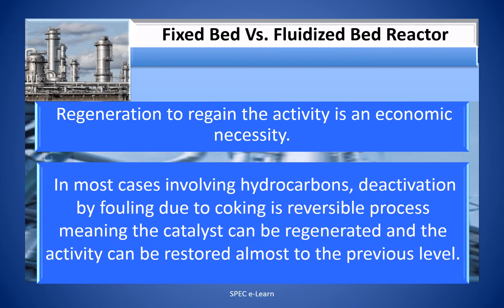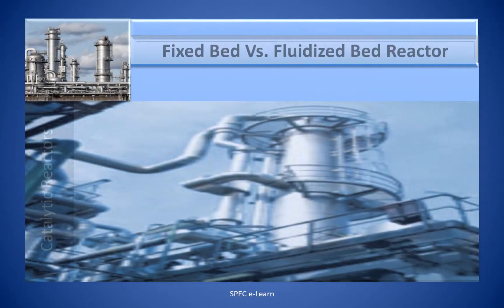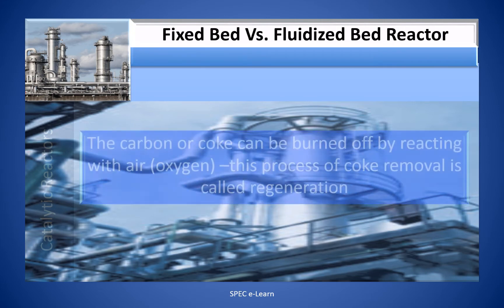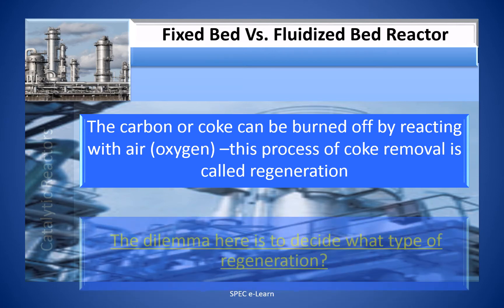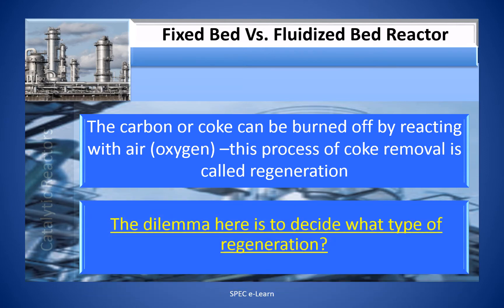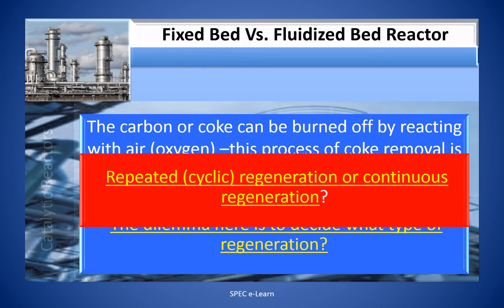In most cases involving hydrocarbons, the deactivation by fouling due to coking is a reversible process, meaning the catalyst can be regenerated and the activity can be restored almost to the previous level. The carbon or coke deposited on the catalyst can be burned off by reacting with air. This process of coke removal by burning is called regeneration. The dilemma is to decide what type of regeneration: repeated regeneration or continuous regeneration.